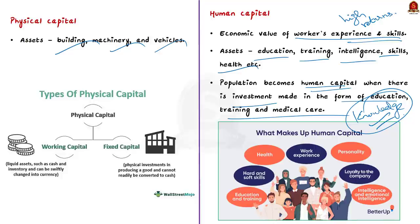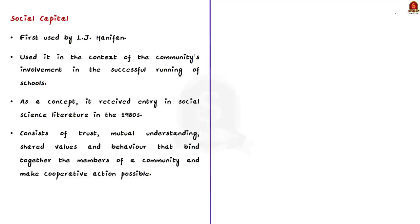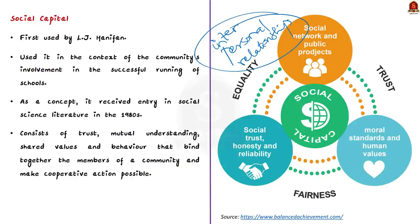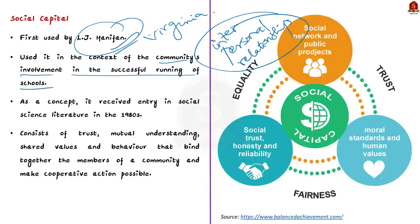Now coming to the main part of the question, which is social capital. Social capital broadly refers to those factors of effectively functioning social groups that include interpersonal relationships, a shared sense of identity, shared understanding, shared norms, shared values, trust, cooperation and reciprocity. The term social capital was first used by L.J. Hanifan, a state supervisor for rural schools in Virginia in 1916, in the context of the community's involvement in the successful running of schools. As a concept, it received entry in social science literature in the 1980s.